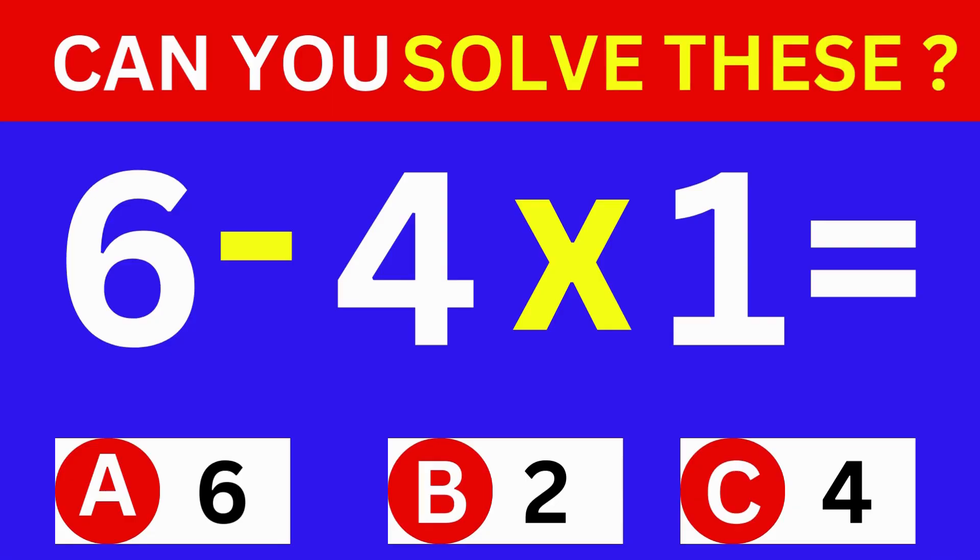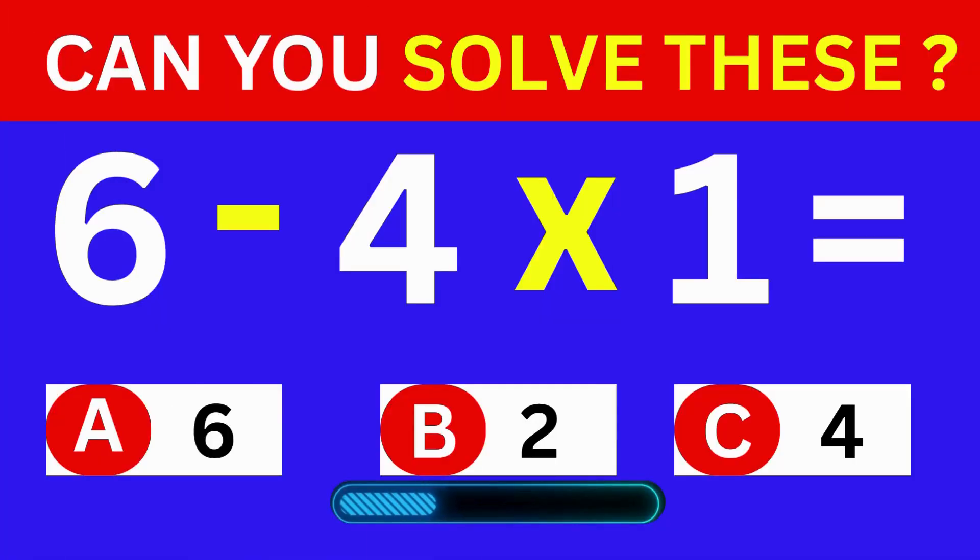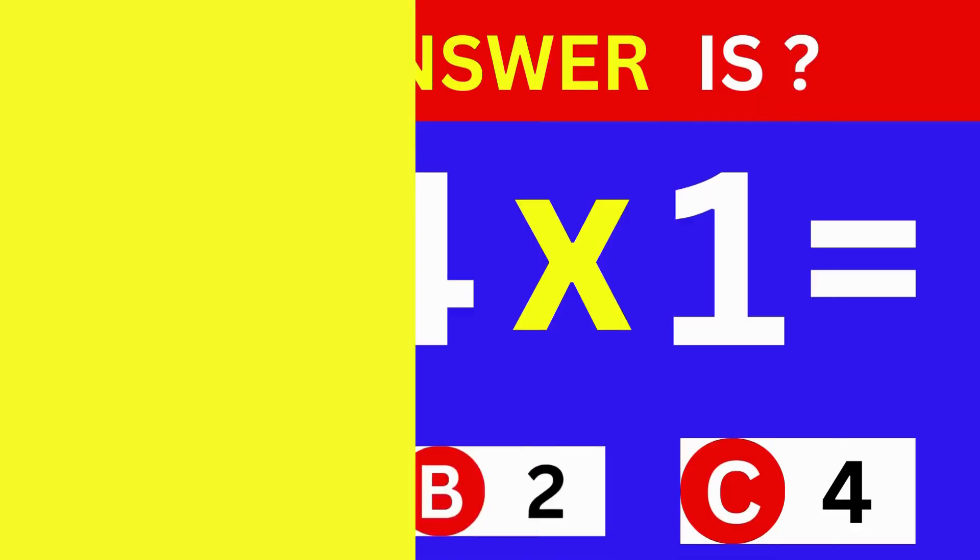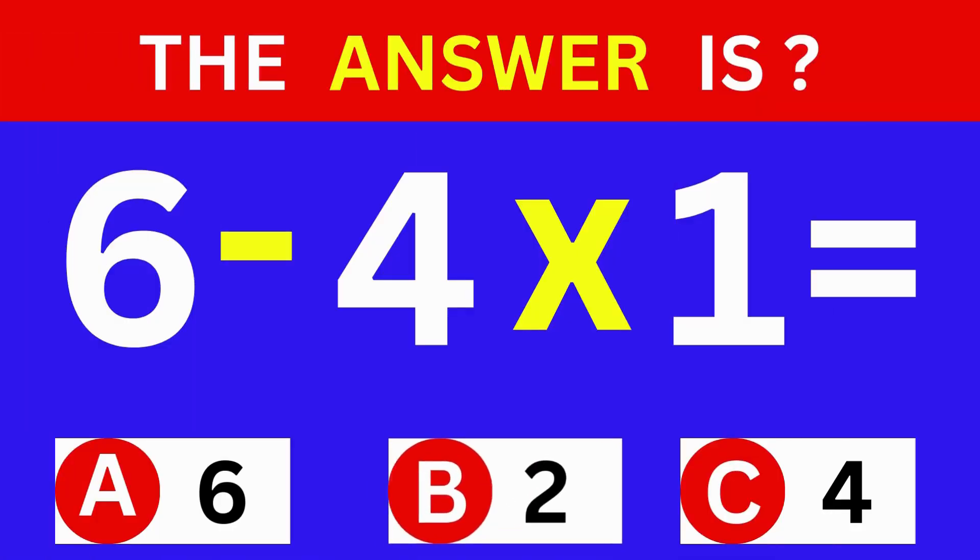6 minus 4 times 1 equals. A. 6. B. 2. C. 4. The answer is Option B. 2.